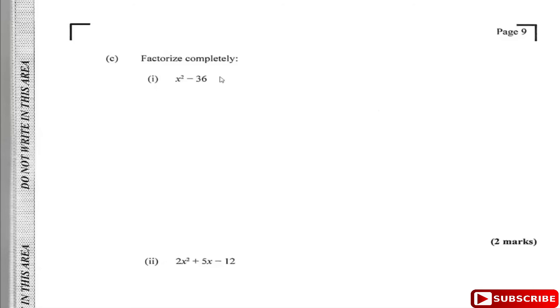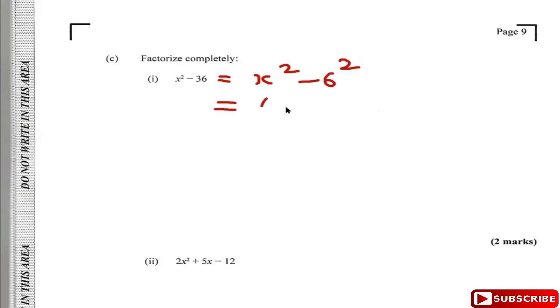Now part C says: factorize completely. Notice that you have two perfect squares — you can write this as x squared minus 36, which is 6 squared. Using the difference of two squares formula, this factorizes as (x minus 6)(x plus 6).